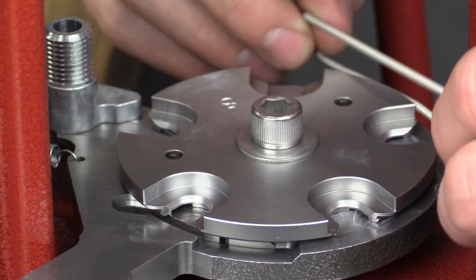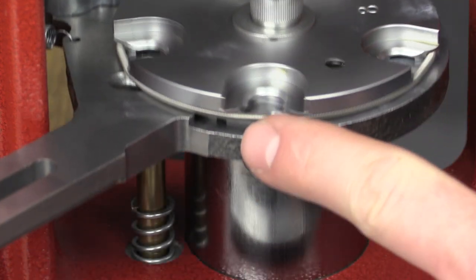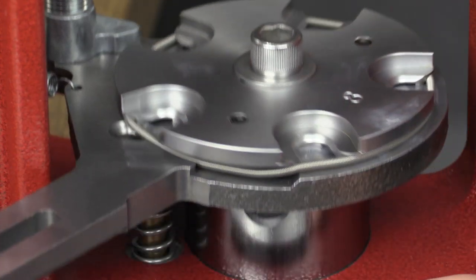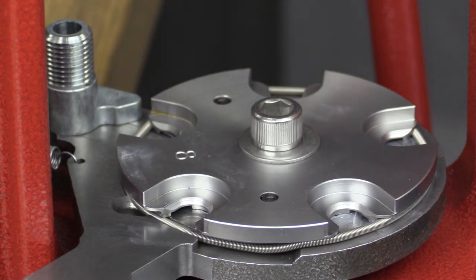Next, stretch the case retainer spring around the shell plate. While cycling the press, push the case retainer spring into the relieved area on the subplate. You will need to cycle the press a couple of stations to achieve these results.